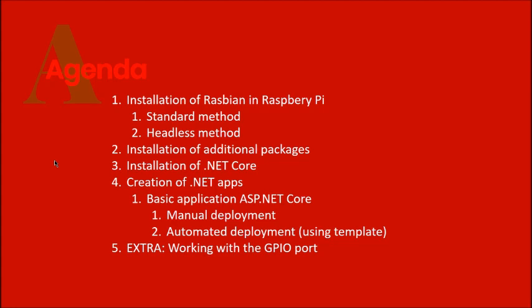We'll take two different approaches for installing and starting up the Raspbian operating system. One is the standard method, which requires you to plug in a display, mouse, and keyboard. The second is the headless method — very convenient because you don't need to plug in any component. It will automatically connect to your Wi-Fi or LAN network and you can start terminals and execute commands remotely.